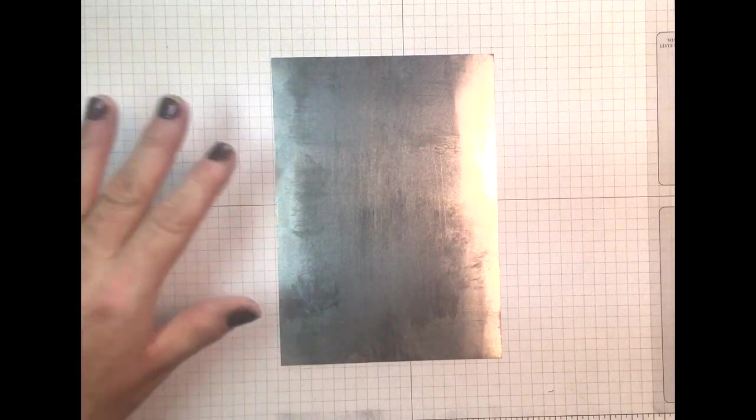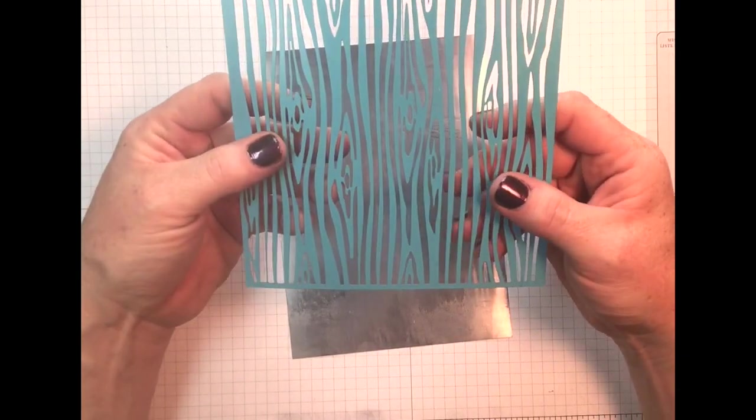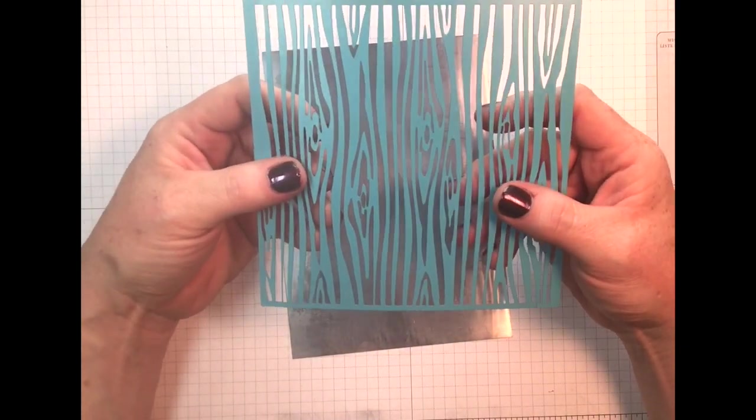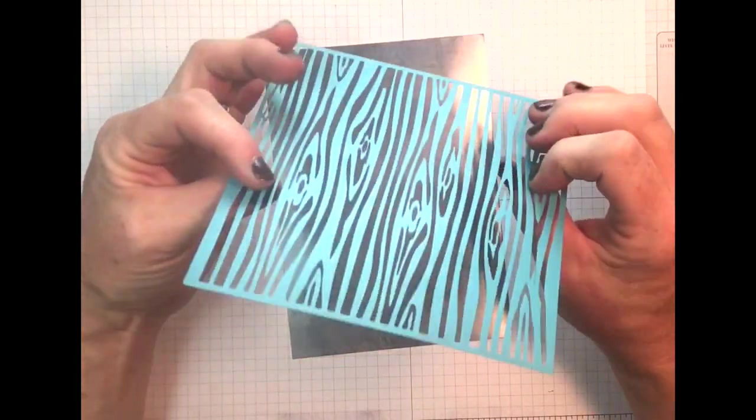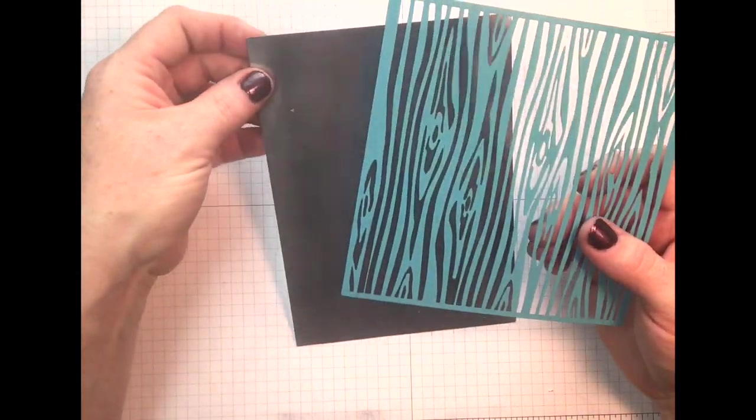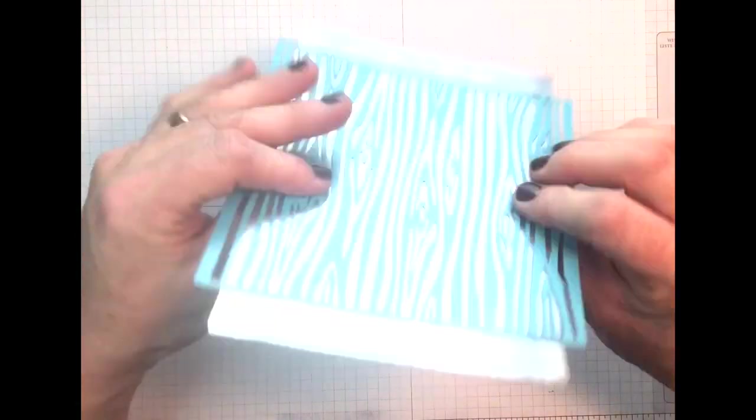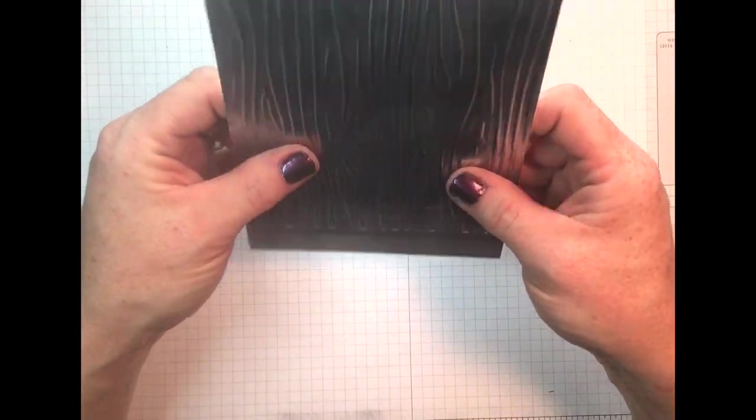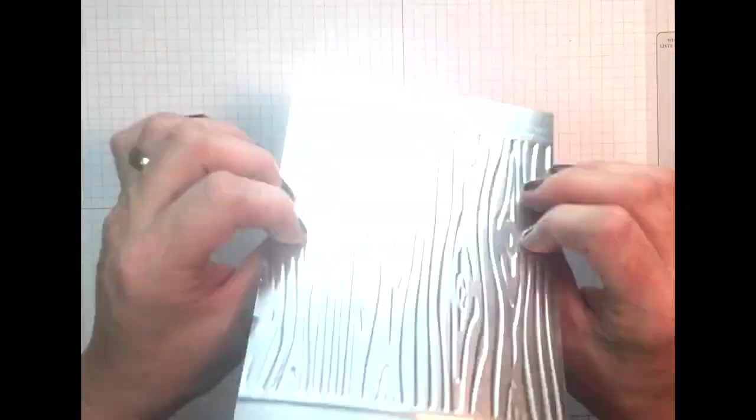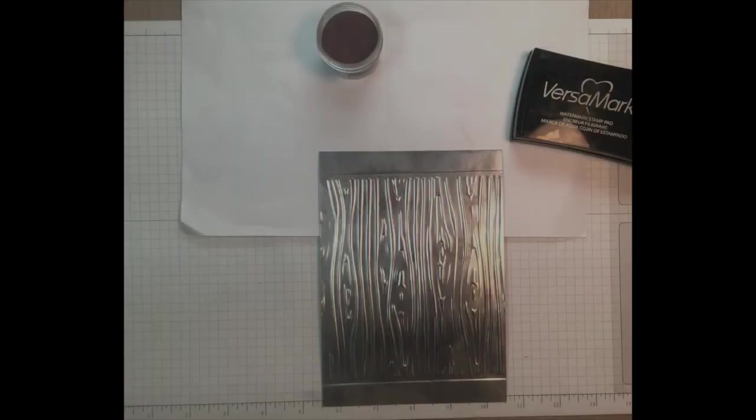The next step is we're going to emboss our aluminum sheet. I'm going to be using the Paper Tray Ink's Woodgrain Stencil. This is a steel stencil, so it works well for embossing as well. But you can use any embossing folder or any other tool you have. I'm going to run it through my die-cut machine to get a nice textured embossed sheet. And here's the shiny side, and here's the inked-up side.